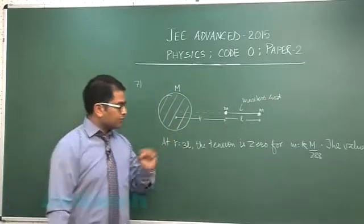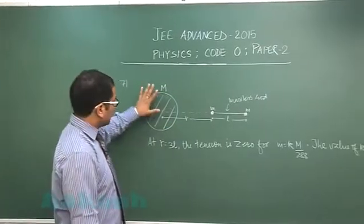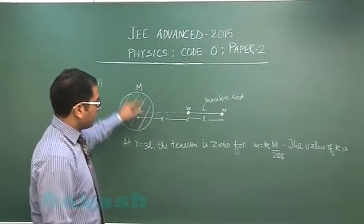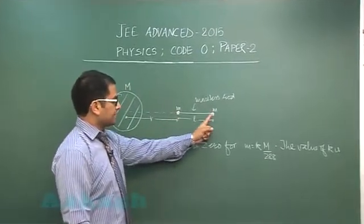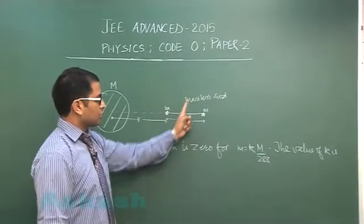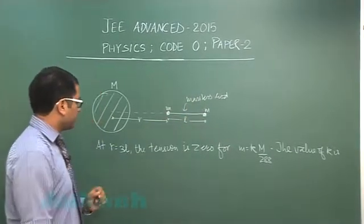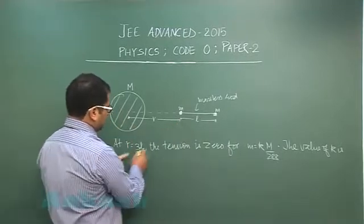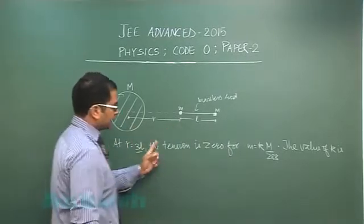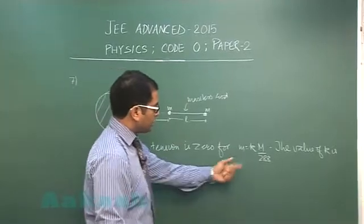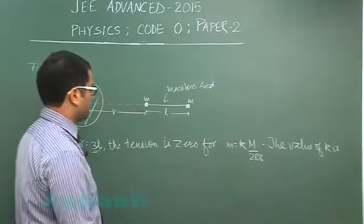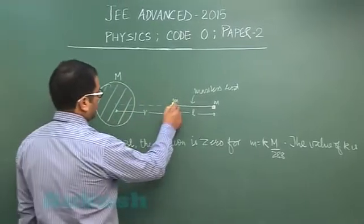Question number seven is from gravitation. There is a uniform solid sphere of mass m and there are two point masses connected by a massless rod of length l. And it says at r equals to 3l for this specific distance the tension is zero for this relation and we need to calculate m.